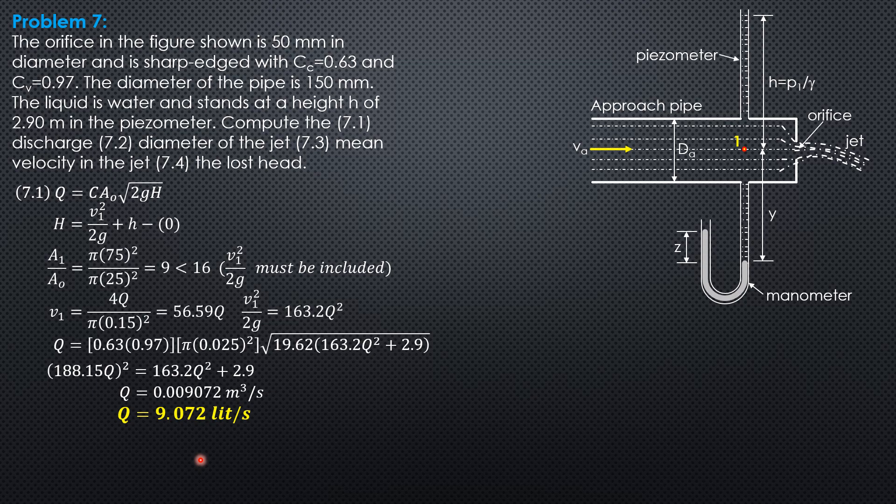For the second question, the diameter of the jet: coefficient of contraction is area at the jet divided by area of orifice. We won't include π/4 since it cancels. So 0.63 equals diameter of jet squared over 50 mm squared. Therefore, the diameter of the jet is 39.69 mm.